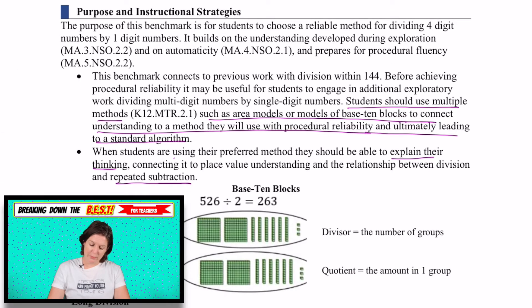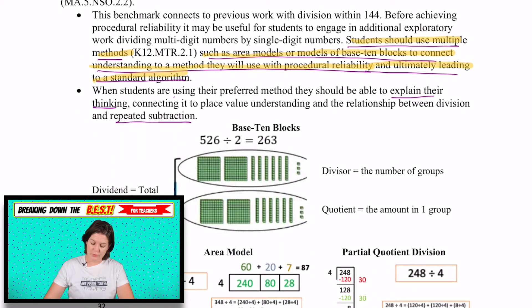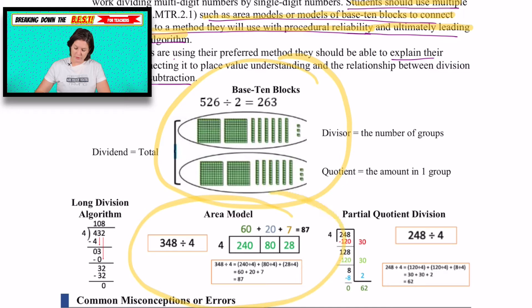Let's see what jumped out at me here. Says that students should use multiple methods such as area models or models with base 10 blocks to connect understanding to a method they will use with procedural reliability and ultimately leading to a standard algorithm. Basically, this means that they should be working with things that make sense to them using strategies that are based on place value. I love that they included what they mean using base 10 blocks. Also, the area model is represented right here. Partial quotients is represented here, and long division here.